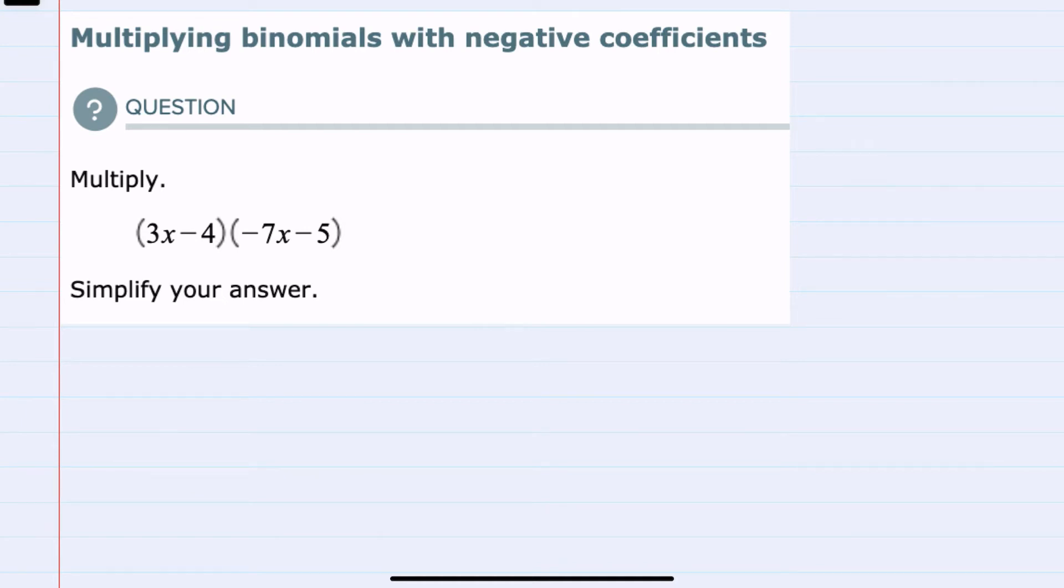Hello. In this video, I'll be helping you with the Alex problem type called multiplying binomials with negative coefficients. We're asked to multiply these two binomials, and since we do have a negative coefficient, we just have to be extra mindful of our signs.